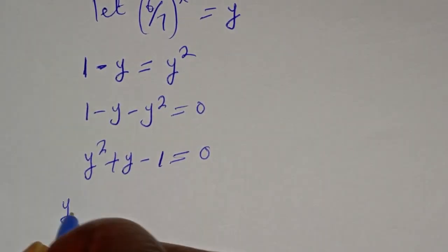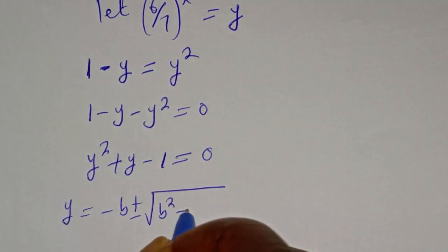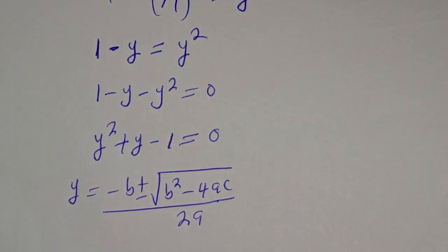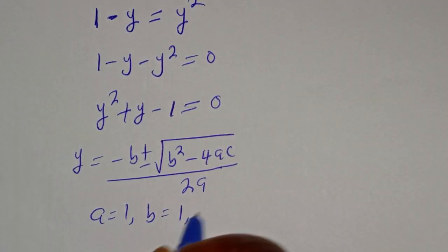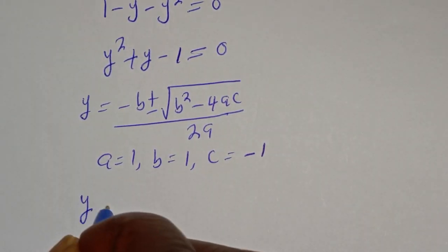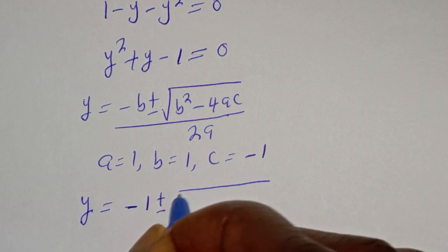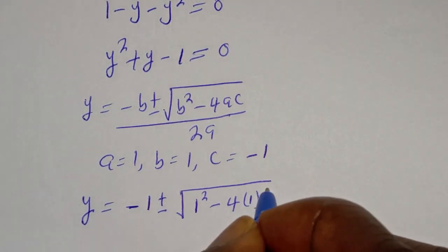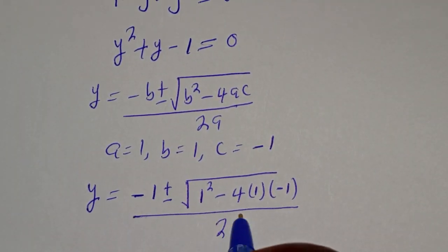Let's solve this using the quadratic general formula. We have y is equal to minus b plus or minus square root of b squared minus 4ac, over 2a. From this equation, a is equal to 1, b is equal to 1, c is equal to minus 1. Substituting: y equals minus 1 plus or minus square root of 1 squared minus 4 times 1 times minus 1, over 2 times 1.